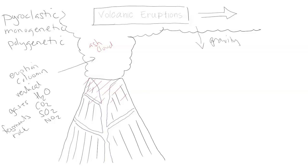The falling ash debris — really thick, hot, toxic, very hard to see through with limited visibility — is called tephra. Tephra can come in different sizes: if it's less than 2 millimeters in diameter, we call it ash — very fine particles. If it's 2 to 64 millimeters in diameter, we call this lapilli.